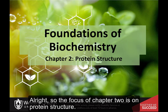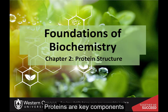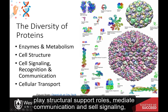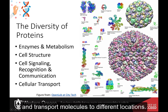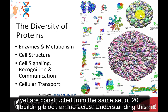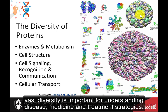The focus of Chapter 2 is on protein structure. Proteins are key components in regulating cellular processes through their abilities to function as enzymes, play structural support roles, mediate communication and cell signaling, and transport molecules to different locations. They come in many sizes and shapes, yet are constructed from the same set of 20 building block amino acids. Understanding this vast diversity is important for understanding disease, medicine, and treatment strategies.